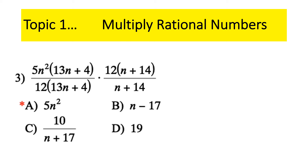Here's a more complicated one. You can cancel things that are being multiplied. There's a 12 times something in the first fraction's denominator and a 12 times something in the second fraction's numerator — we can cancel the 12s. If it were 12 plus N, you couldn't cancel, because that's addition. There's also an (N+14) on one and an (N+14) on the other — cancel those. And a (13N+4) on both — cancel those too. The only thing left is 5N squared — that's the answer.